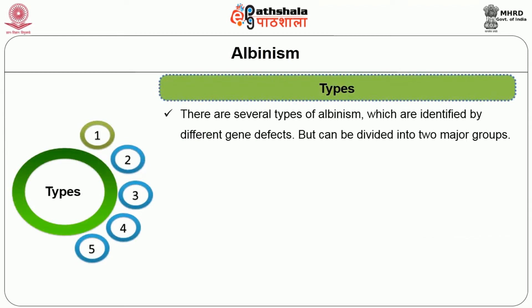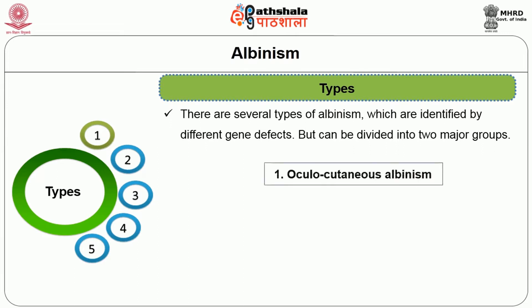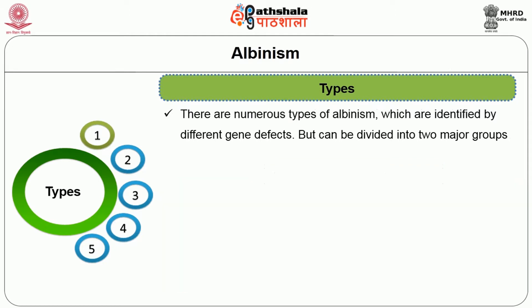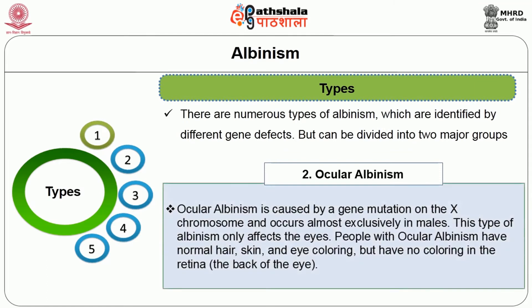There are several types of albinism identified by different gene defects, divided into two major groups. The first is oculocutaneous albinism, a group of conditions affecting pigmentation of the skin, hair and eyes, with more than 10 forms known. Such albinos can be biochemically classified as tyrosinase negative or tyrosinase positive. The second type is ocular albinism, caused by a gene mutation on the X chromosome and occurring almost exclusively in males, affecting only the eyes.